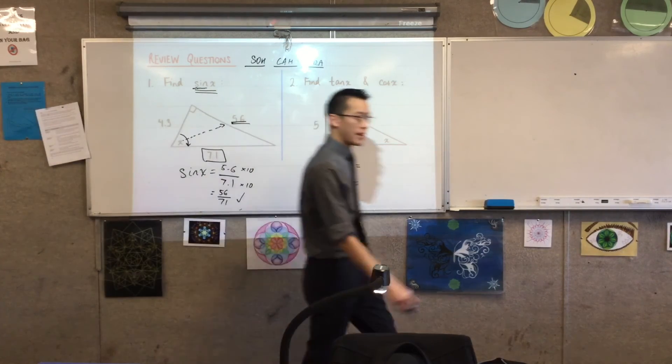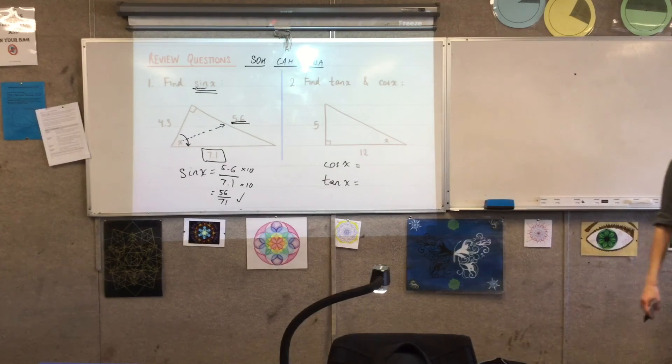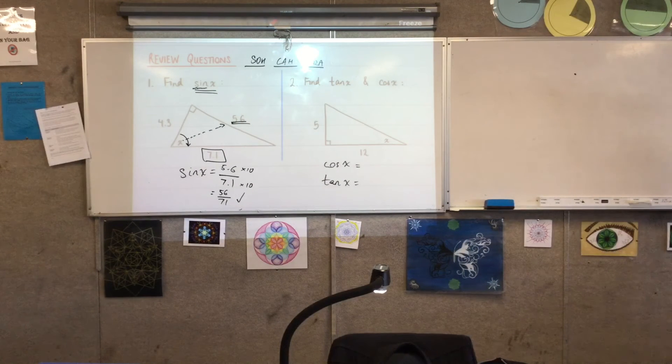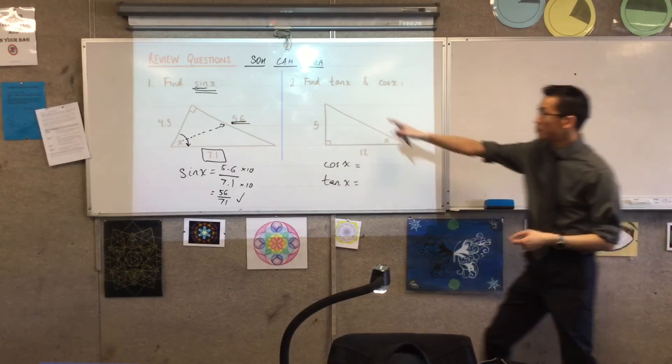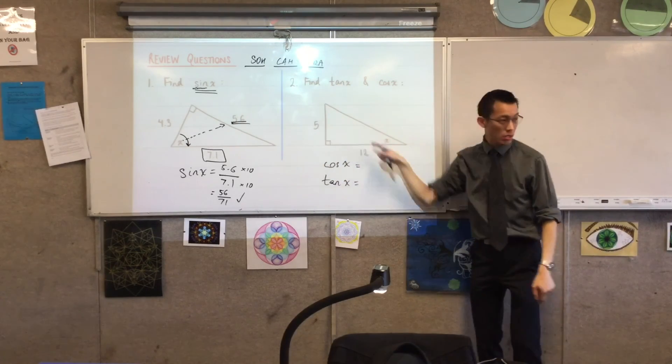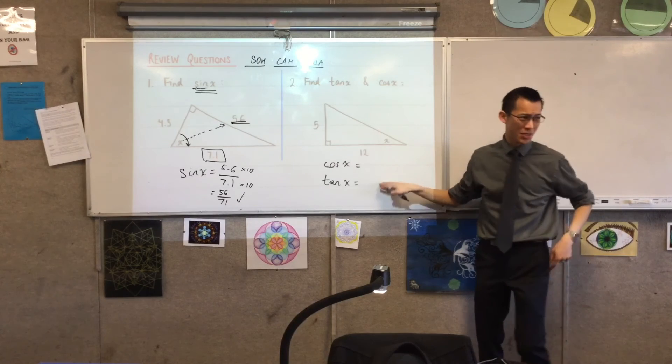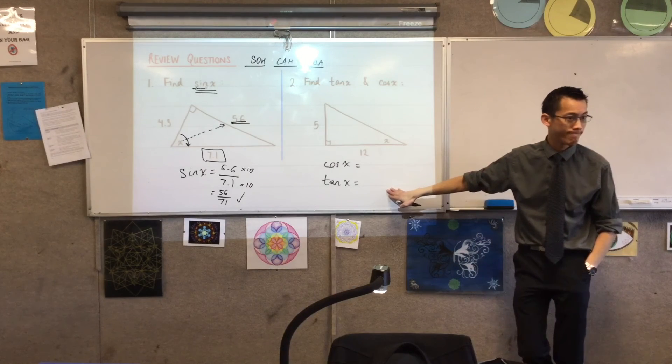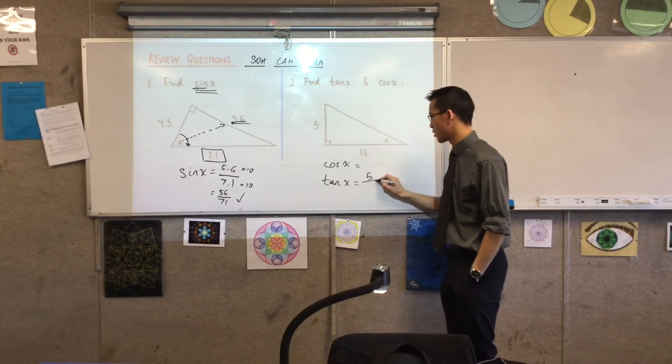Right, let's come over to here. Now, there's a bit of a trick involved. We can do the tan(x) first easily because tan(x) is which pair of sides? Yeah, it's opposite on adjacent, which are the two sides you already know. So can someone just read off from me? What's tan(x)? Very good. Opposite on adjacent.